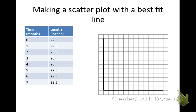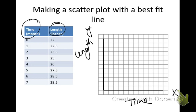We're going to practice making a scatter plot and our best fit line. I first need to figure out what's my dependent and what's my independent variable. I have my x and my y. I know time is going to be my x and I know length is going to be my y.